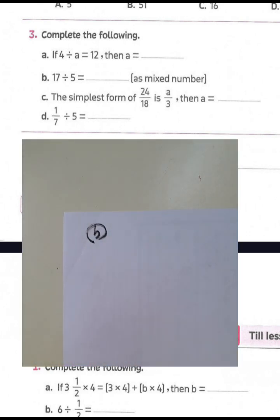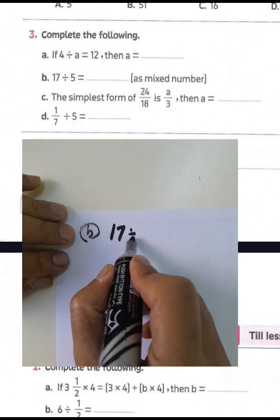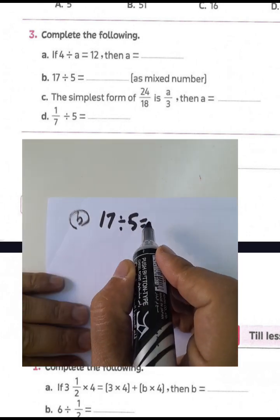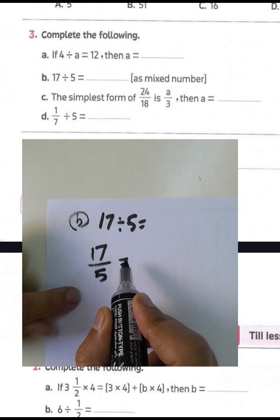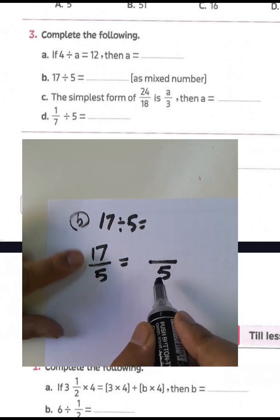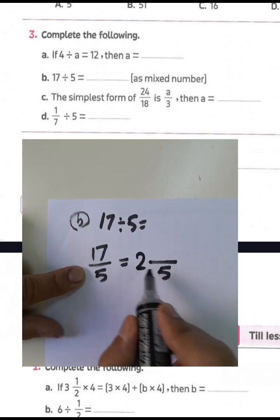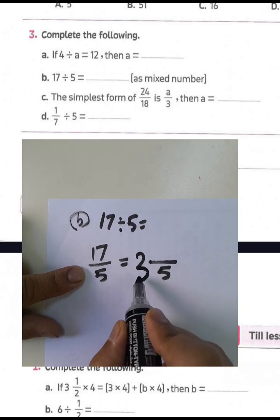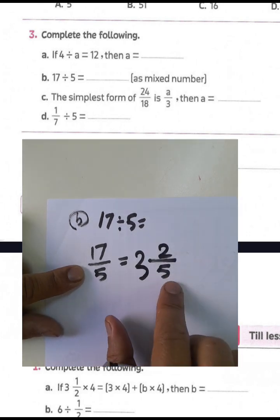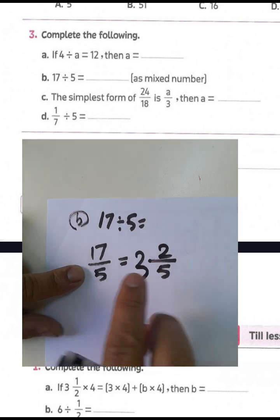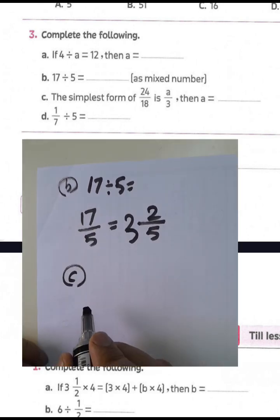Letter P: write seventeen divided by five as a mixed number. Since three times five equals fifteen and fifteen plus two equals seventeen, the remainder is two. So seventeen divided by five equals three and two-fifths.